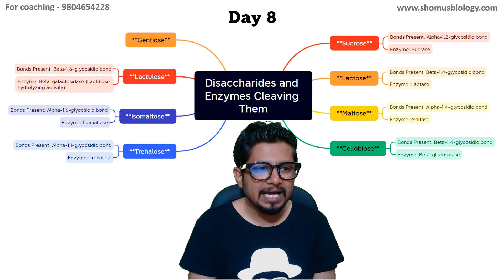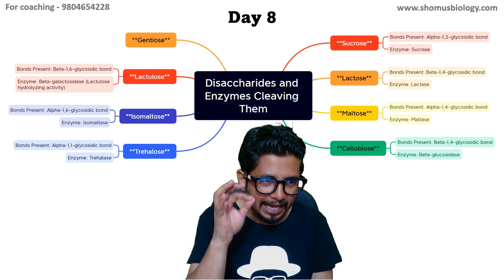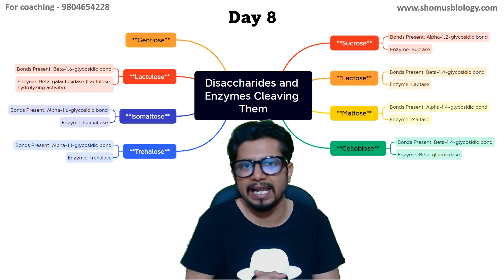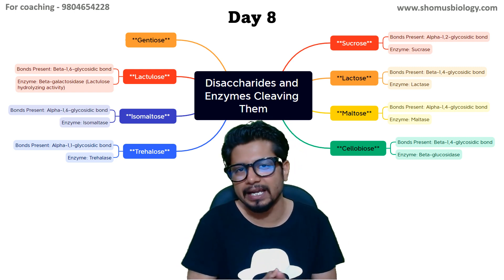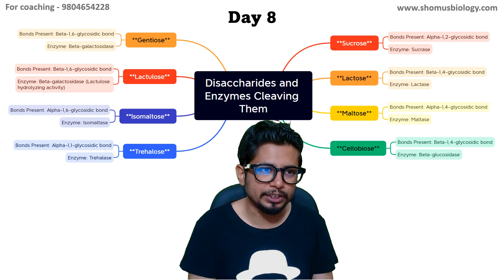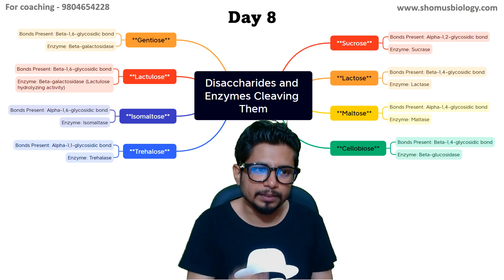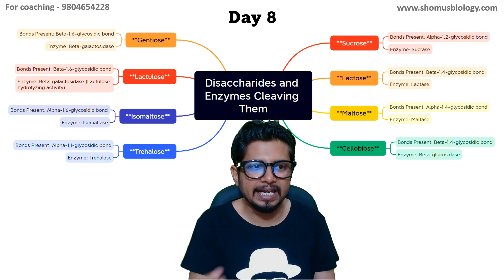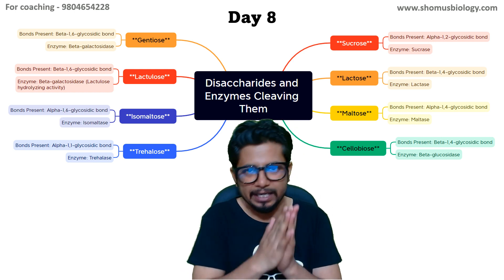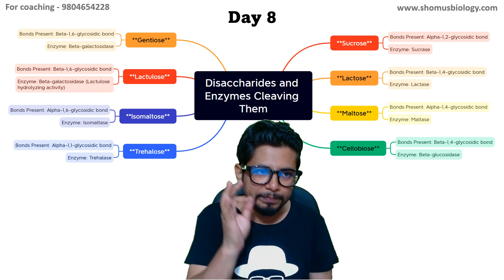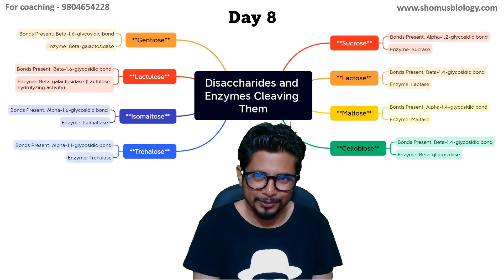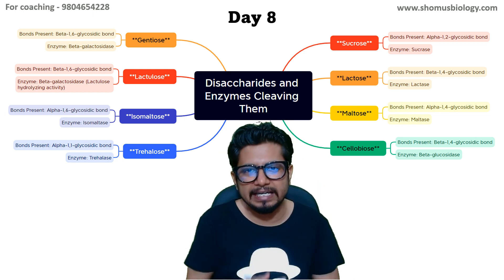Lactulose has a beta 1-6 glycosidic bond, and the hydrolyzing activity is only present in beta-galactosidase. Lastly, gentiobiose also has a beta 1-6 glycosidic bond, again cleaved by beta-galactosidase. So beta 1-6 glycosidic linkages can only be cleaved by beta-galactosidase, as clearly shown in this mind map.